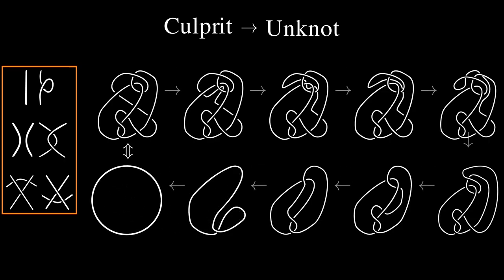So, we obtained the unknot. But what Reidemeister move did we use for each transformation? I've given you the answer for three of them. Pause the video and see if you can spot the Reidemeister moves we made for the remaining transformations.